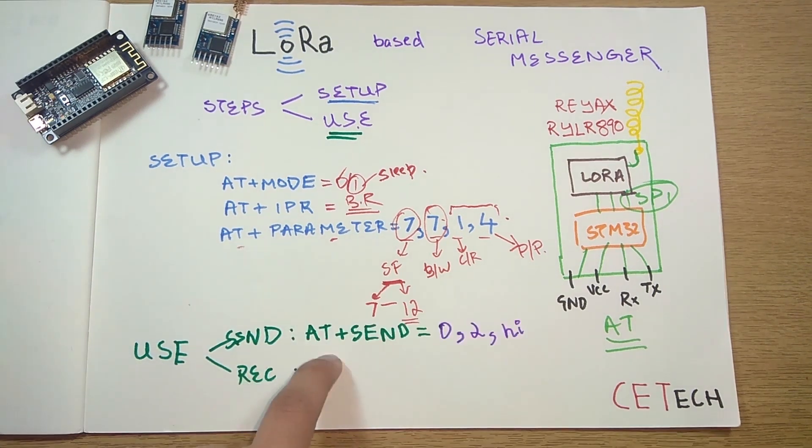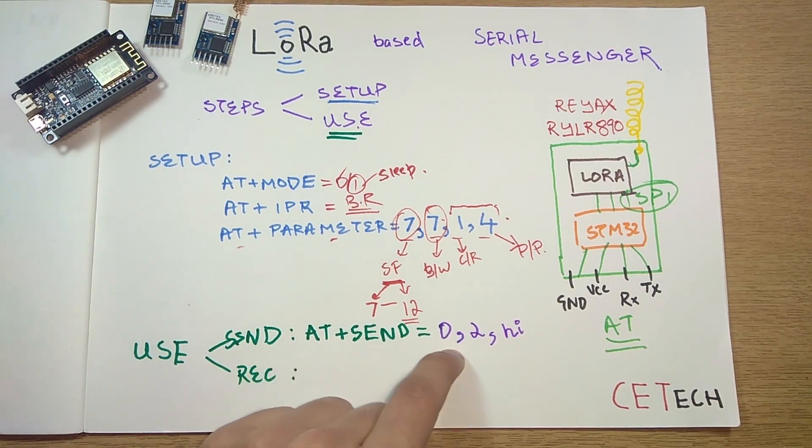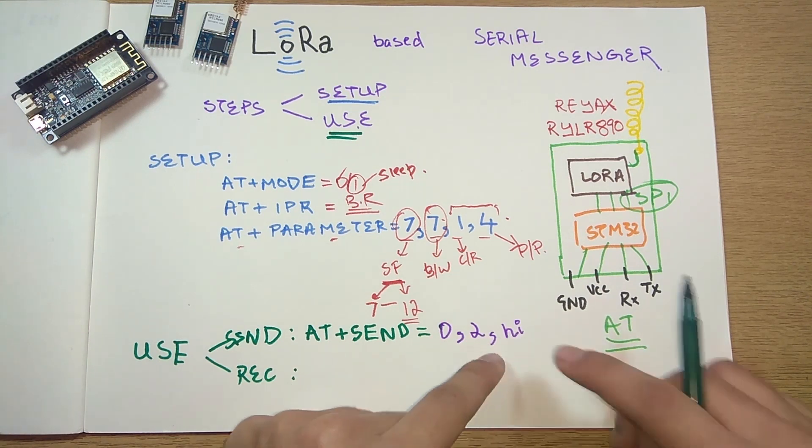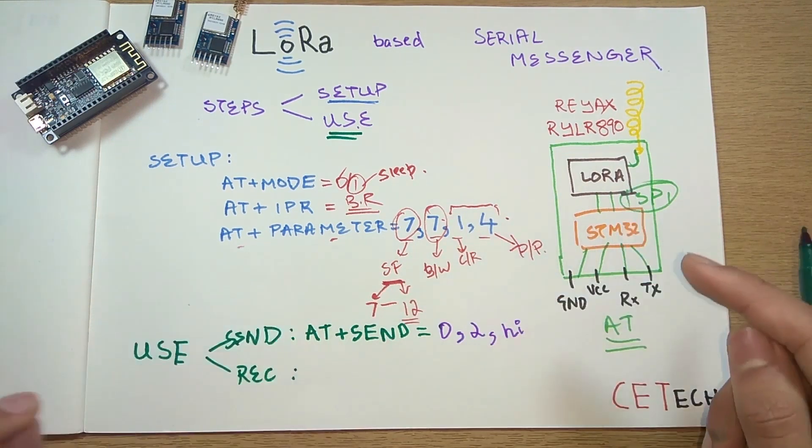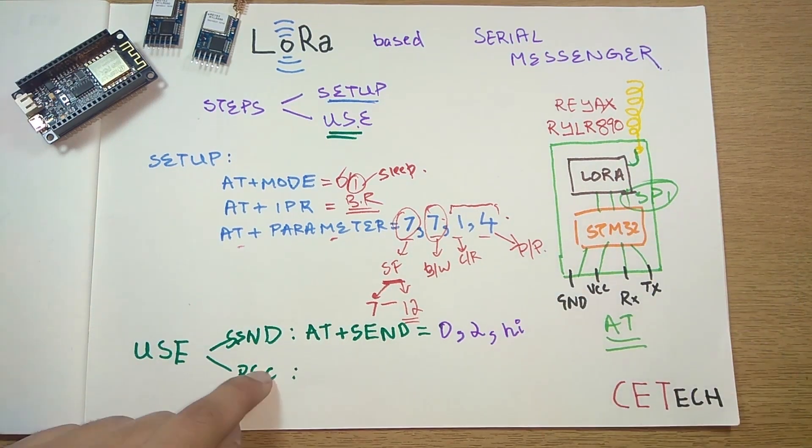Moving on to the use case scenario, for using we'll see send and receive commands. For sending, we use AT+SEND equal to the address that we are sending at, the payload length or the length of the data that we are sending, and the data as well. This is the basic command that we'll be using in our code.